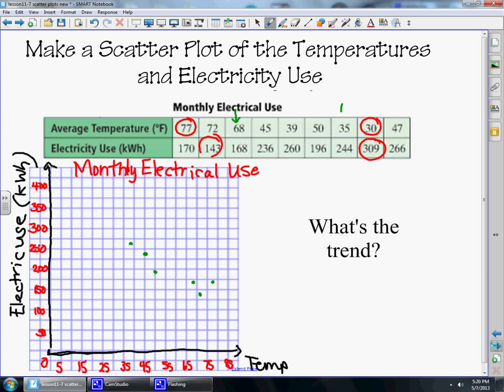Then we have 35 degrees and we use 244 kilowatts. We have 30 degrees and we use 309 kilowatts, just a little bit over 300. And then at 47 degrees, just a little past 45, we use 266 kilowatts.